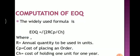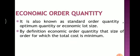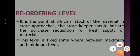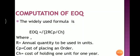The formula is under root 2RC_P upon C_H, where R is annual quantity to be used in units, C_P is cost of placing an order, and C_H is cost of holding one unit for one year.